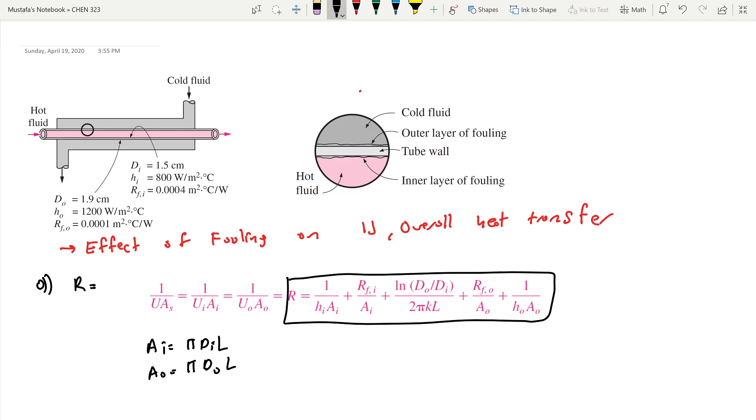Whenever you're asked to find something per unit length, just assume it is one meter. If we assume L is one meter, the inner diameter gives us 0.047 m². For the outer, you'll get 0.0597 m².